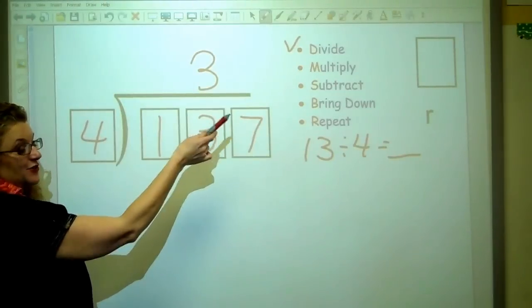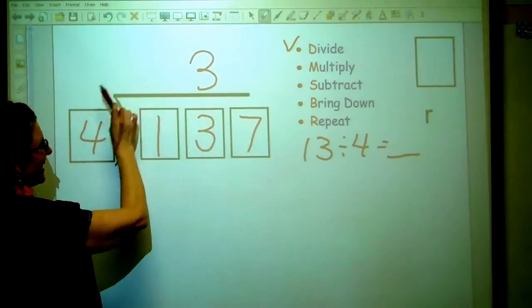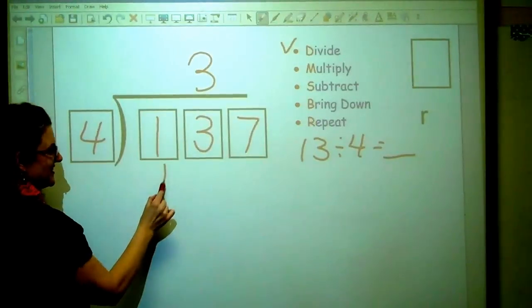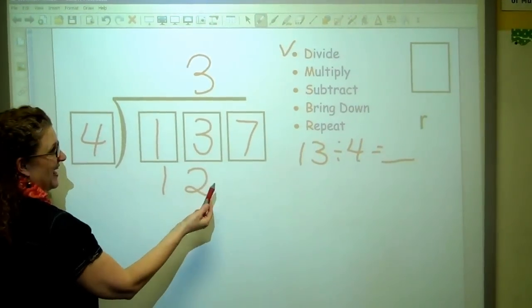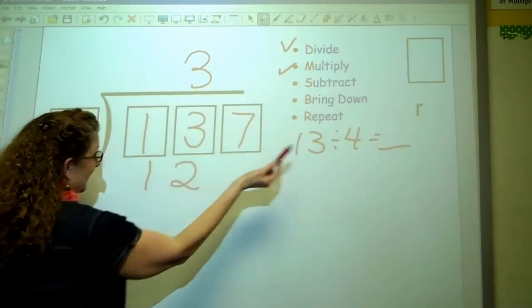So 3 times 4. Now I'm going to do my multiplying. 3 times 4 equals, what does it equal? Well, of course it equals 12. And I bring that there. And I check off that I did my multiplying.